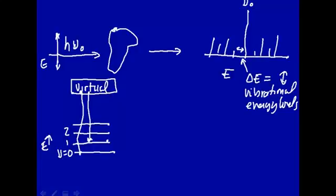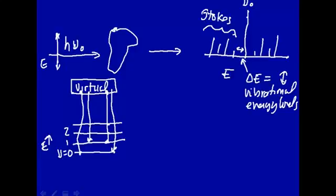One can also start at a higher vibrational energy level, go up to the virtual state, and then come down to a lower energy level, so the energy coming out of the system is greater than the energy going in. These lines at lower energy are called the Stokes lines, and the lines at higher energy are called the anti-Stokes lines.